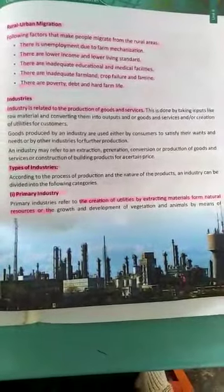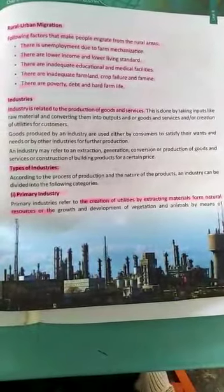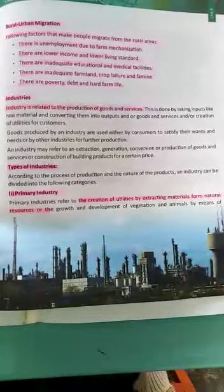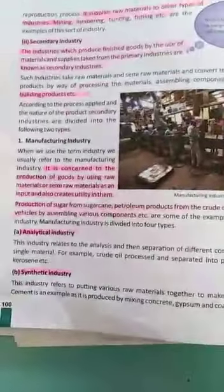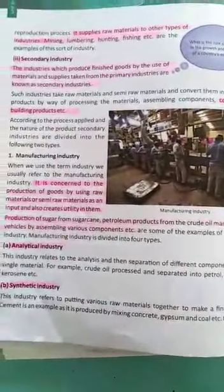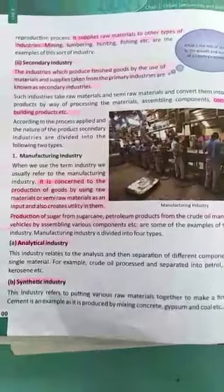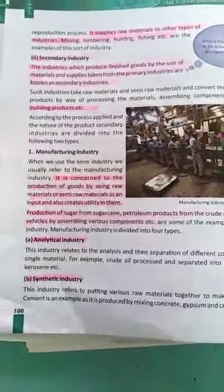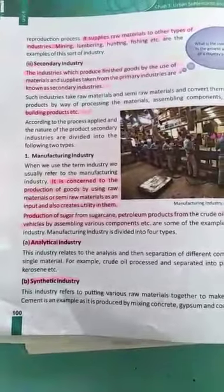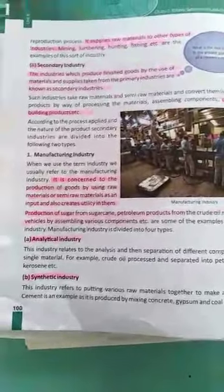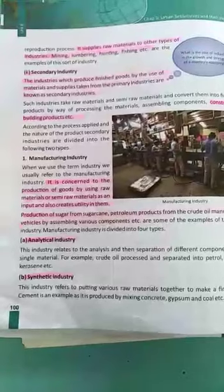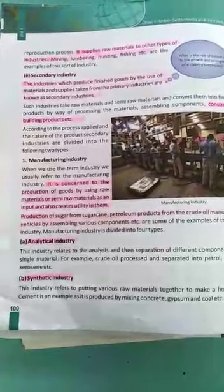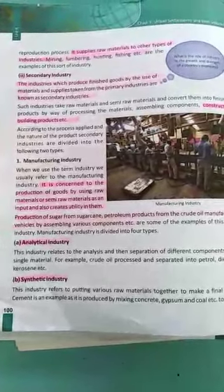Primary industry supplies raw materials to other types of industries. Mining, hunting, and fishing are examples of this sort of industry. Secondary industry produces finished goods by the use of materials and supplies taken from the primary industries.